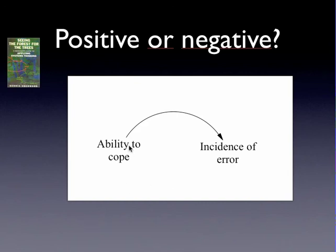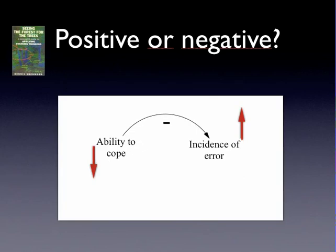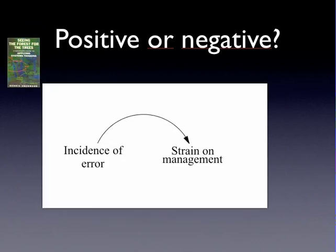Let's see another one. Ability to cope and incidence of error. What do you think? Well, if you decrease the ability to cope, probably we increase the incidence of error. So it's a negative causal link.